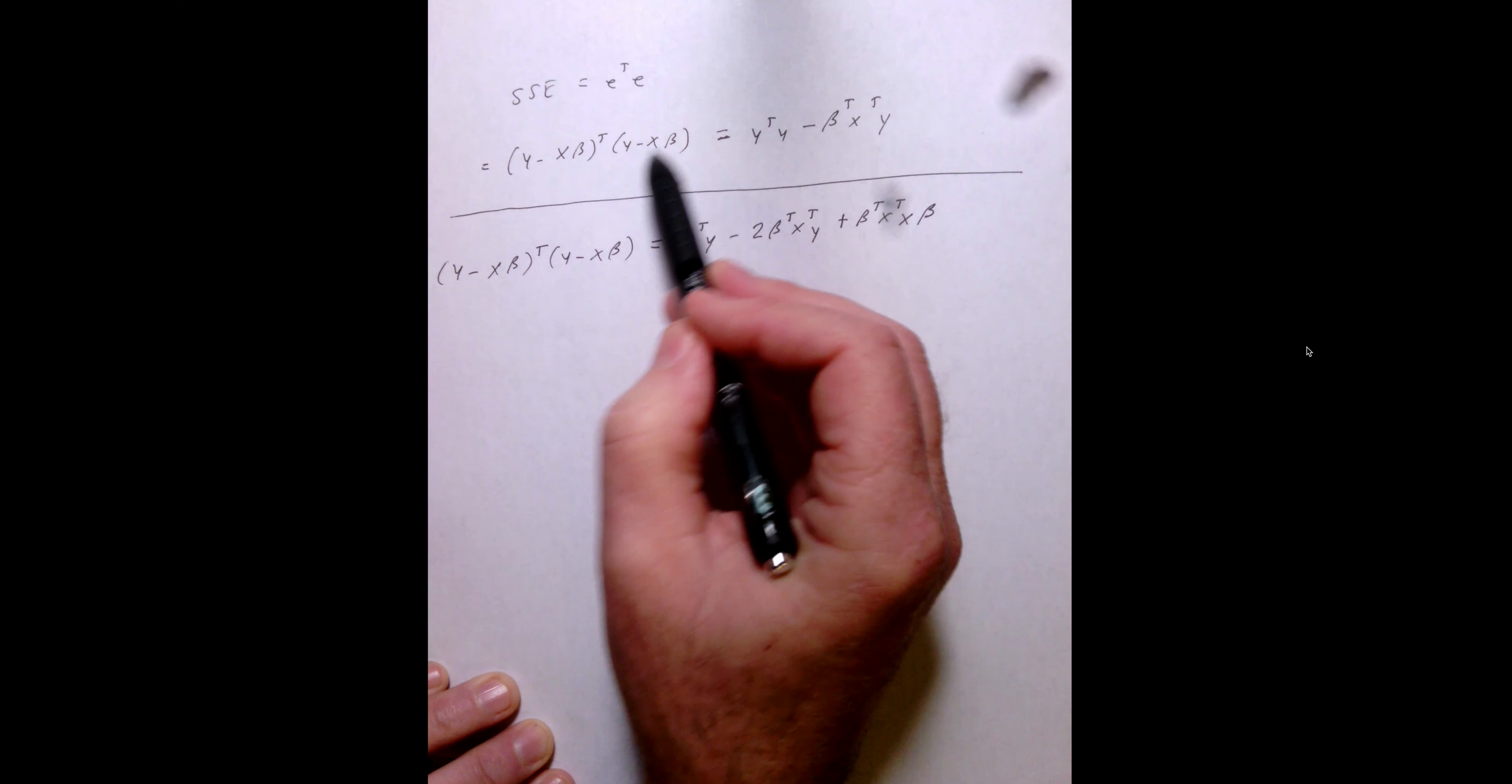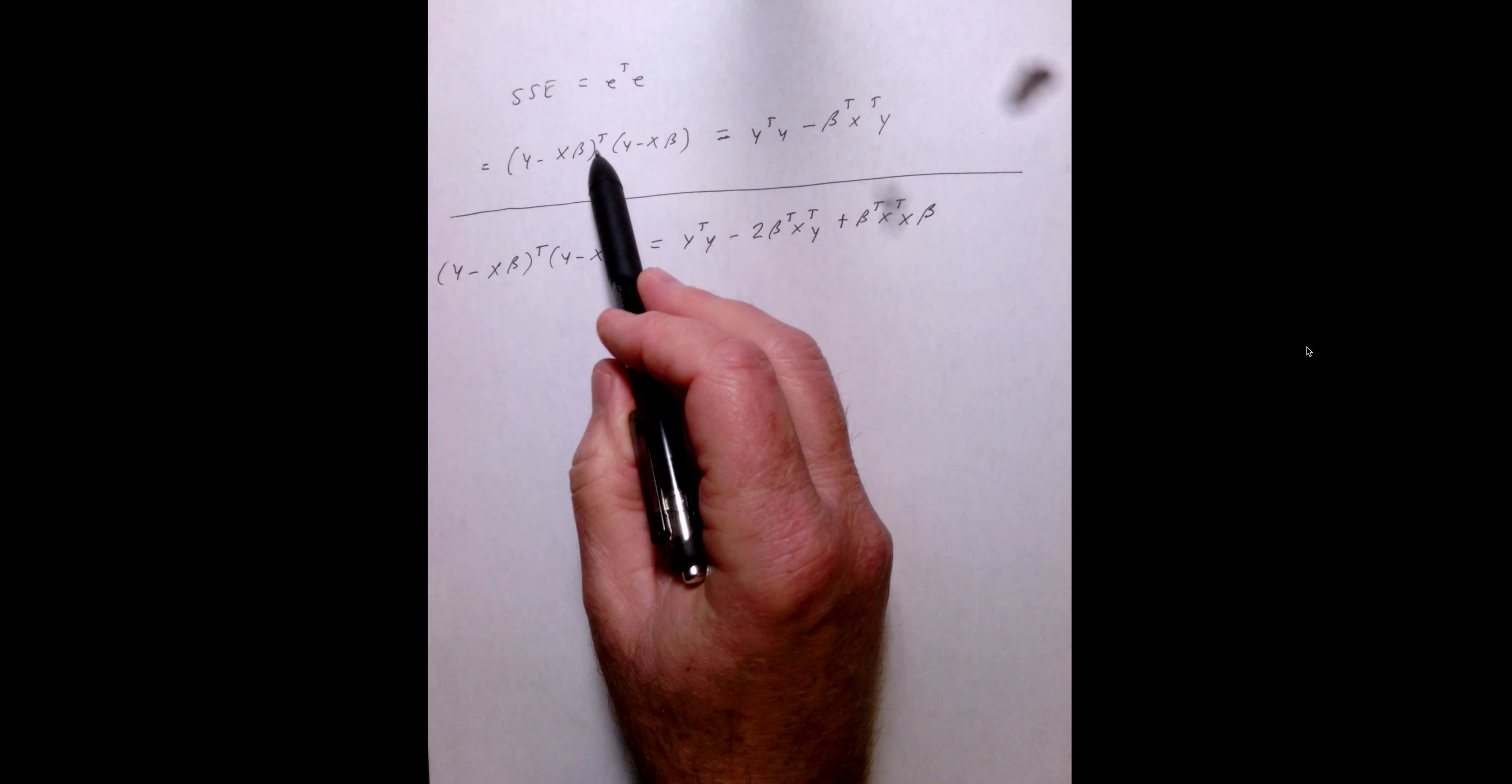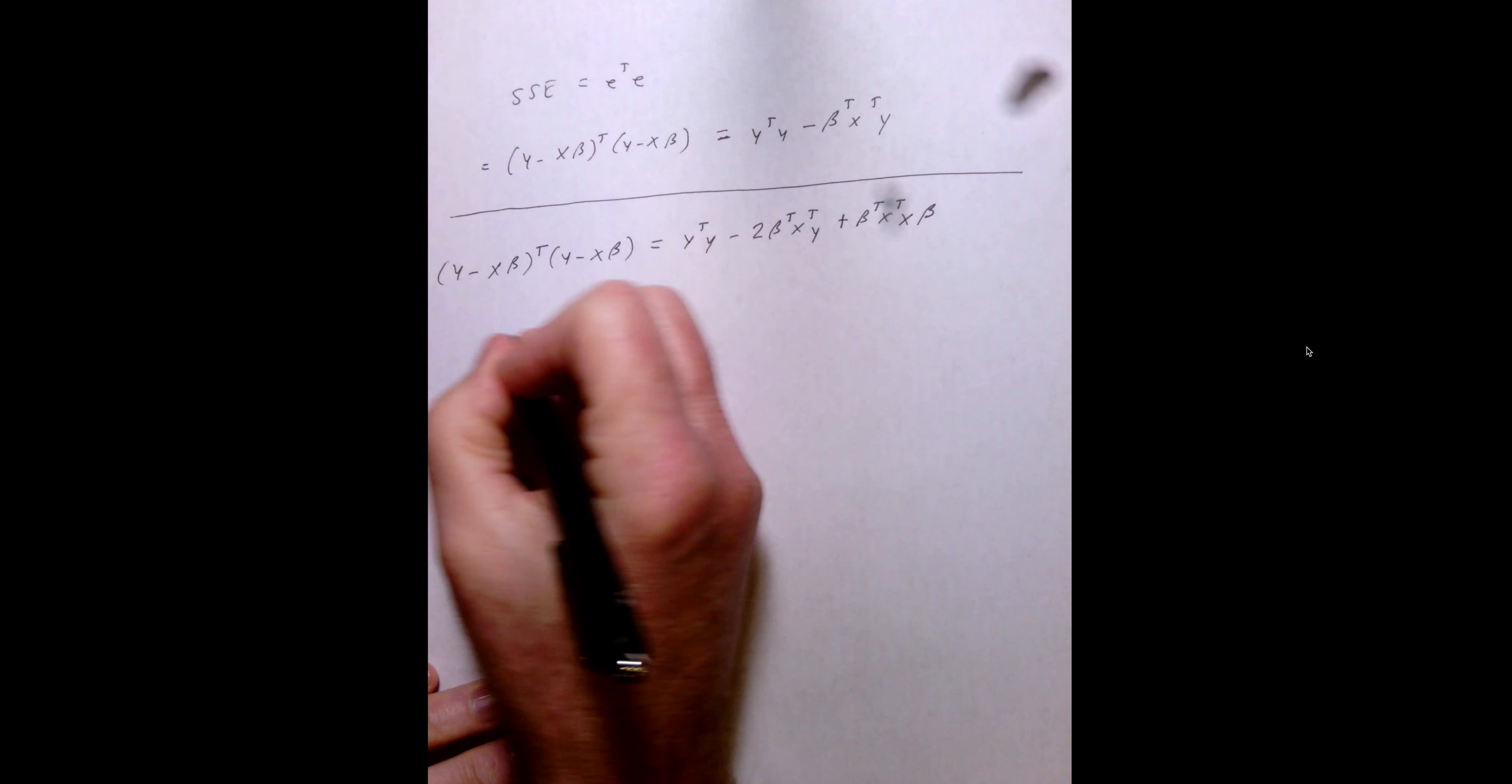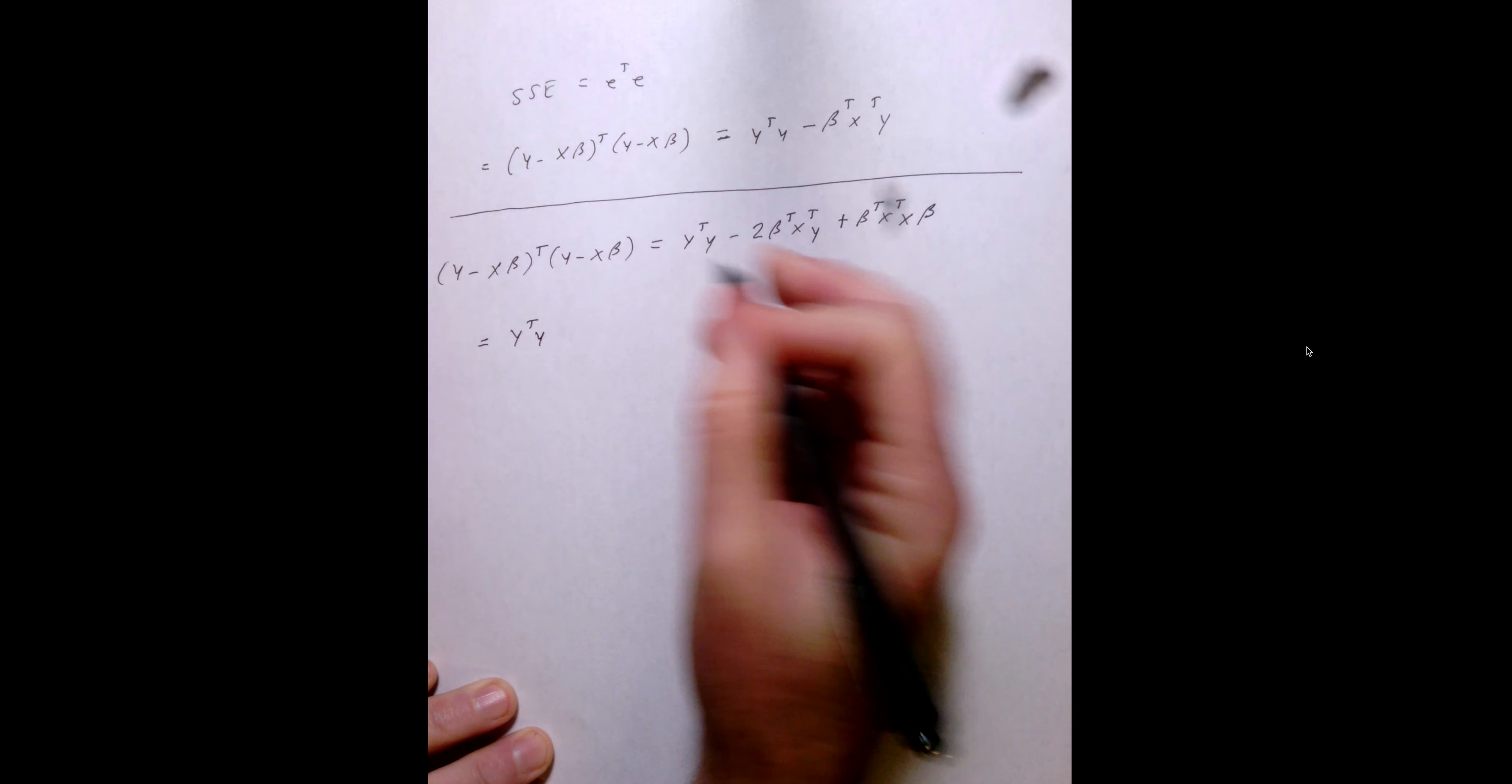And then, of course, the inners and outers give us... x beta transpose becomes beta transpose x transpose. So, we get 2y... All right, cool.